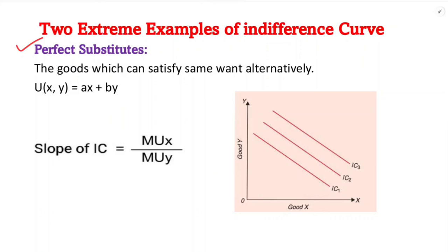When two goods are perfect substitutes — for example tea and coffee — the marginal rate of substitution becomes constant. That means the slope of the indifference curve remains constant in the case of perfect substitutes.